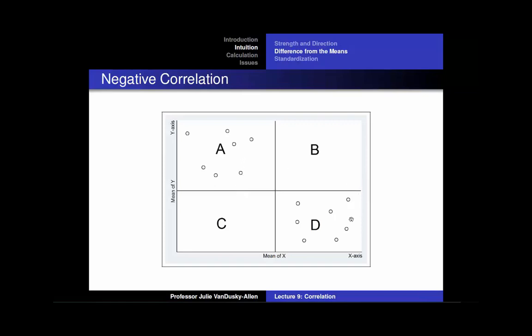When an observation is above the mean of x, it is below the mean of y. All observations vary from the mean of x and y in a different pattern. When there is no relationship between x and y, there is no pattern to how observations vary from their means — observations are located within each quadrant.